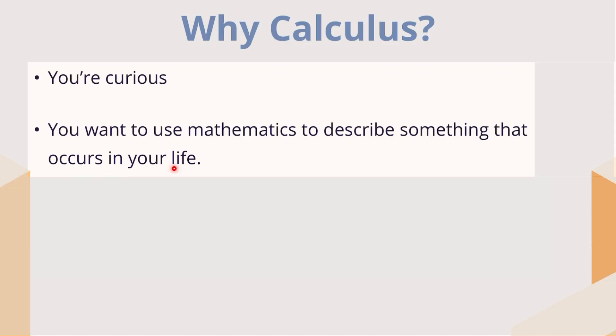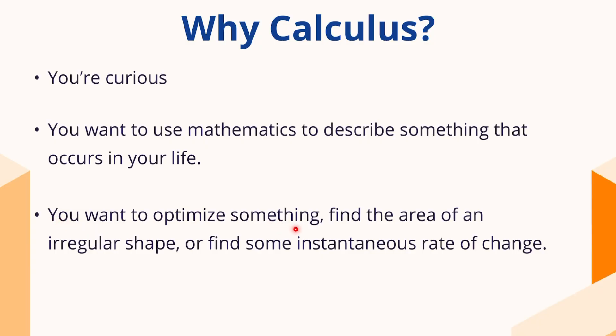Or maybe you're looking at finding the instantaneous rate of change somewhere — you've got a curve of some sort and you need to find the derivative. These are all great ways to apply calculus to your topic. You want to use mathematics to describe or model something that occurs in your life. That's what the math IA is all about. Or you want to optimize something, find the area of an irregular shape, or find some instantaneous rate of change — those are the key concepts we really focus on in the standard level courses.